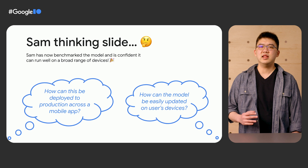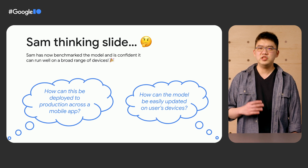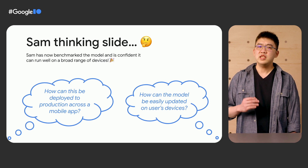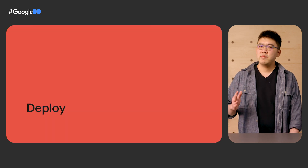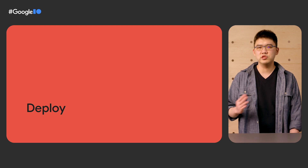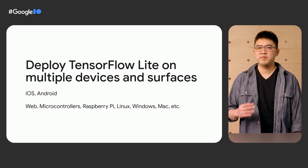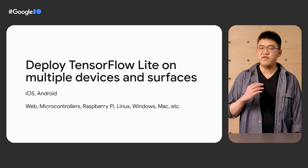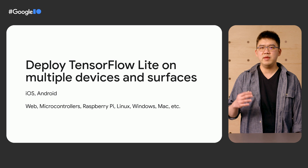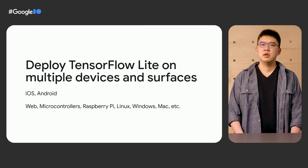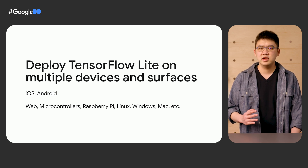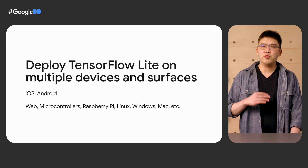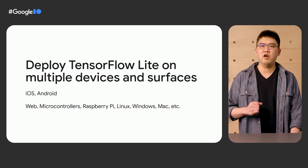Sam is now confident that the model will run performantly, and the next step is shipping the feature to millions of users on different platforms. Sam is ready to deploy the art portrait model to Android and iOS, using the TensorFlow Lite Java API for Android and Swift or Objective-C API for iOS. Sam also finds out that the same TensorFlow Lite model can be used on other devices and services — web, Raspberry Pi, and desktop operating systems. This ability to deploy across multiple platforms is a key benefit of TensorFlow Lite.